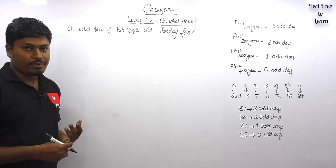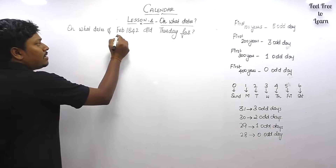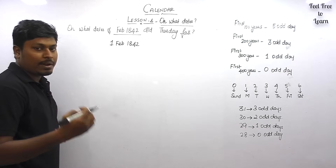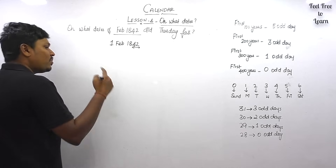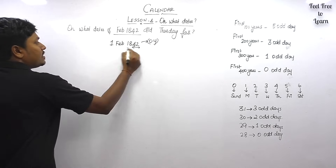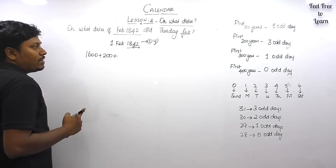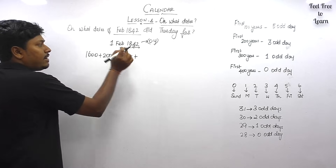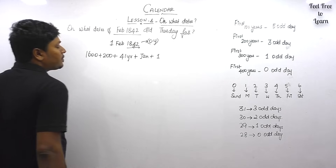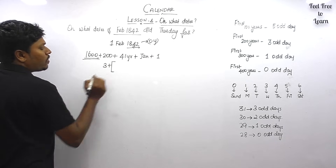Question three: on what dates of February 1842 did Thursday fall? Our target is to find all the Thursdays in February 1842. First, find the day of the week for 1st February 1842. Check if 1842 is a leap year — the last two digits 42 are not divisible by four, so 1842 is an ordinary year. Write 1842 as 1600 plus 200 equals 1800, with remaining 42 years — written as 41 years plus the 42nd year. Before February we have only January.